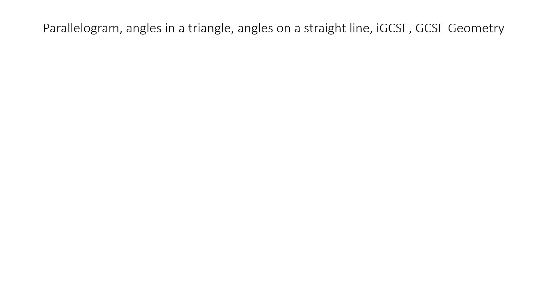Hello and welcome to this exercise on parallelogram angles in a triangle, angles on a straight line, and IGCSE GCSE higher tier geometry question. We've got this diagram here. It says the angle ADB is 38 degrees and the angle BEC is 41 degrees and the angle DAB is 120 degrees.